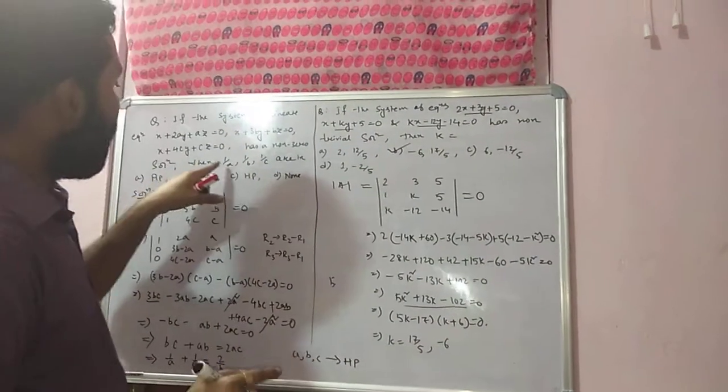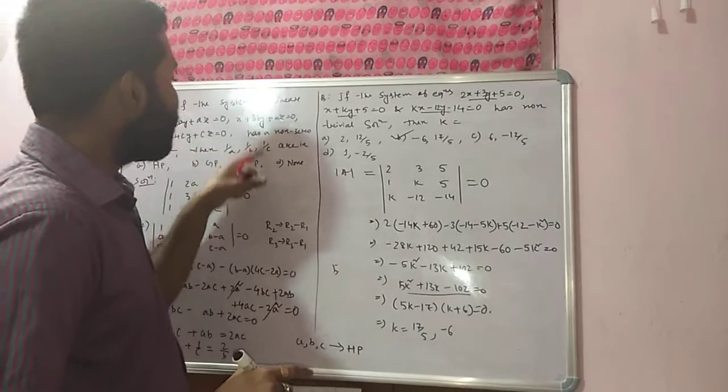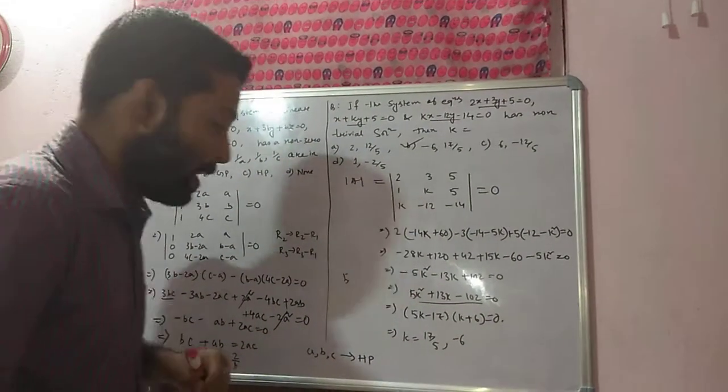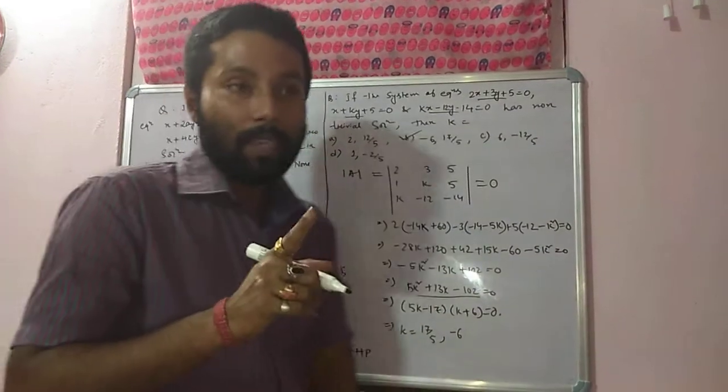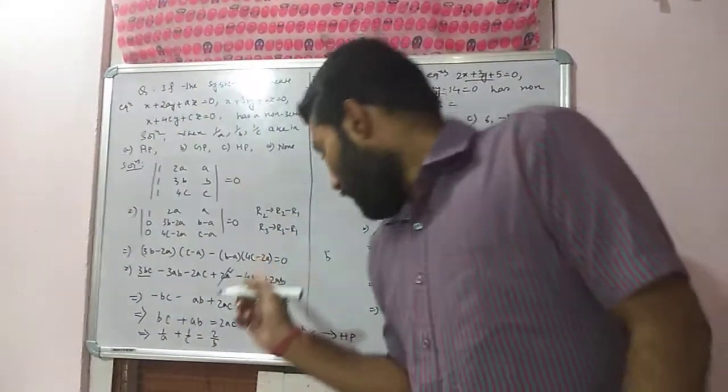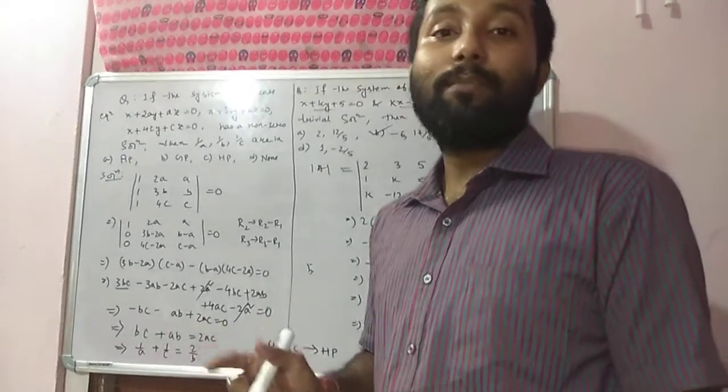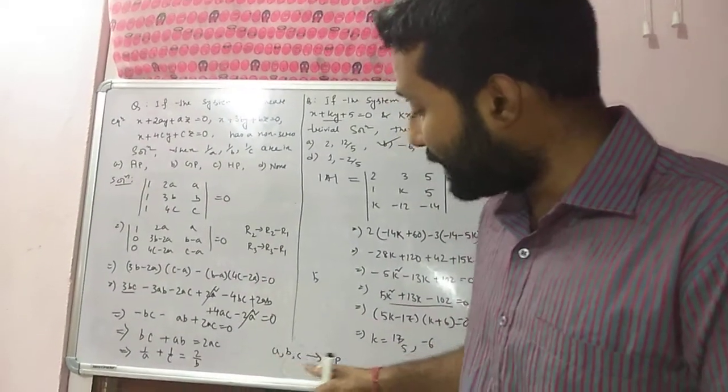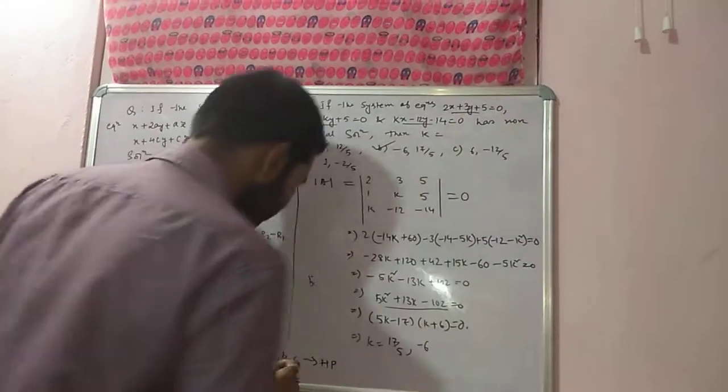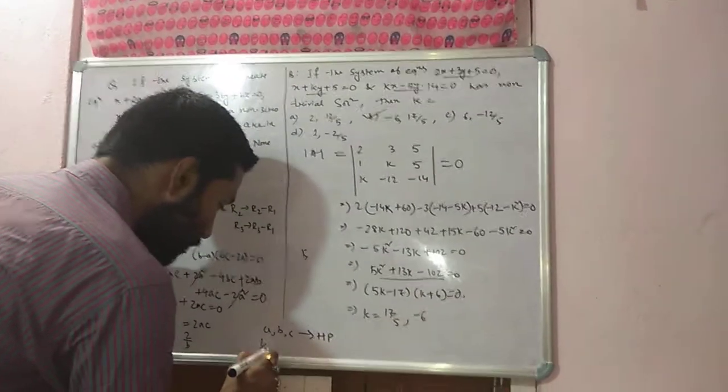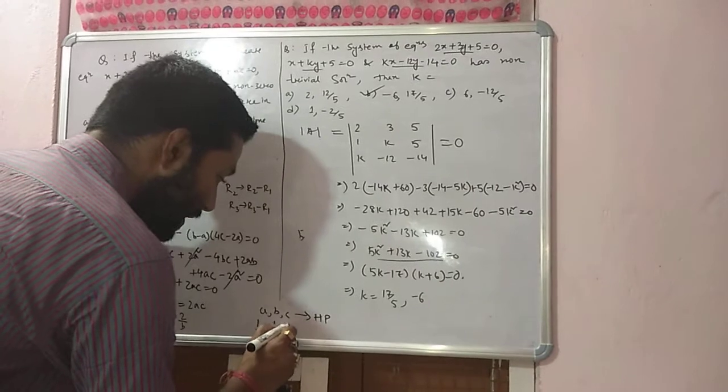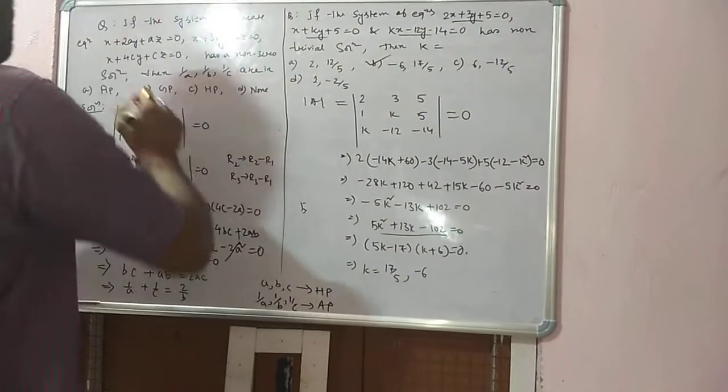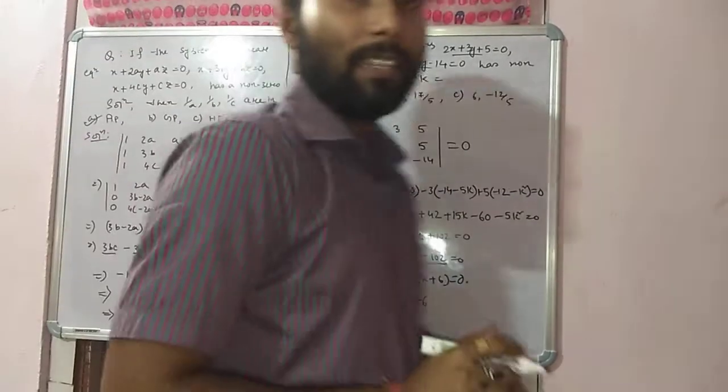But our question is whether 1 by A, 1 by B, and 1 by C are in AP, GP, HP, or none of this. We know harmonic progression is the reciprocal of arithmetic progression. So if ABC are in HP, therefore their reciprocals 1 by A, 1 by B, 1 by C are in arithmetic progression. So first option is the correct answer.